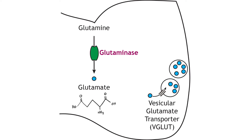Glutamate is an amino acid transmitter and is the primary excitatory neurotransmitter in the brain. In the presynaptic terminal, glutamine is converted into glutamate via the enzyme glutaminase, which is the rate-limiting step in the synthesis pathway. Glutamate is packaged into vesicles for storage via the vesicular glutamate transporter.